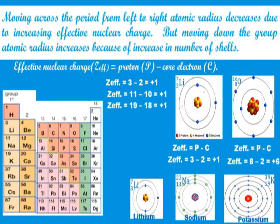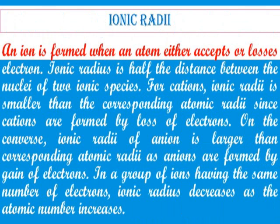Having explained that, we proceed to look at ionic radius. What is ionic radius? First of all, an ion is formed when an atom either accepts or loses electrons. Ionic radius is the same as atomic radius, only that it is half the distance between the nuclei of two ionic species. For cations — which are positively charged ions — the ionic radius is smaller than the corresponding atomic radius, since cations are formed by loss of electrons.